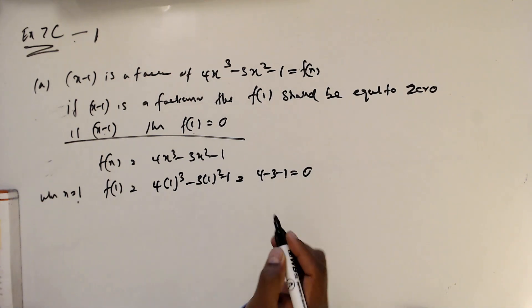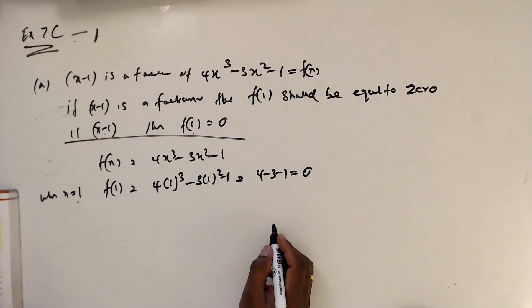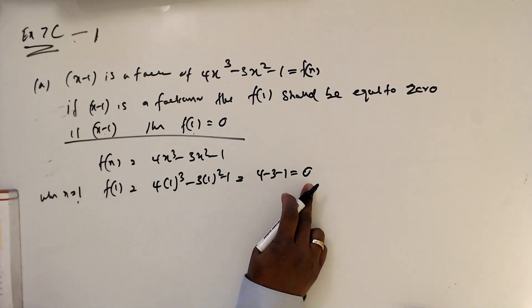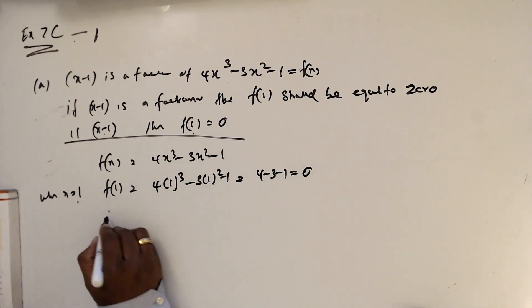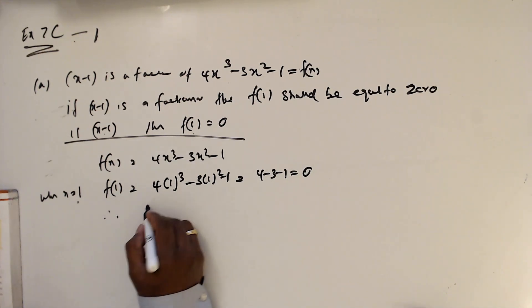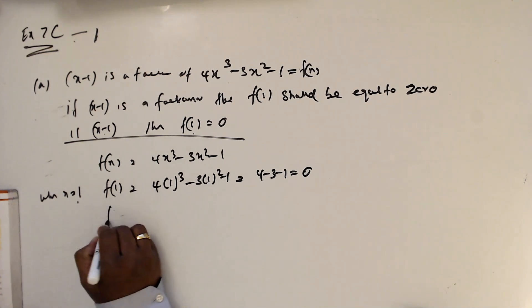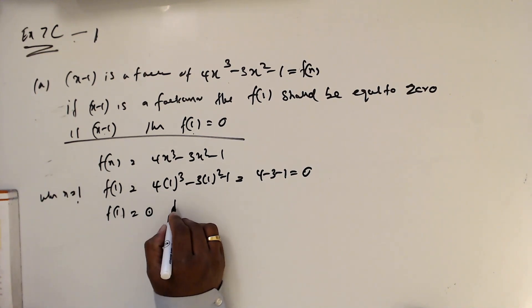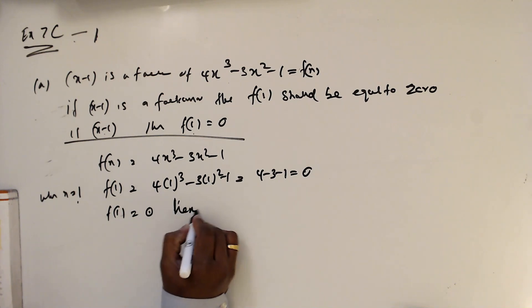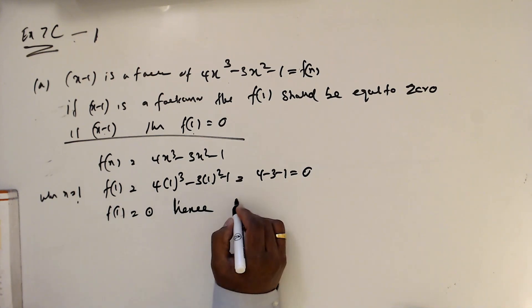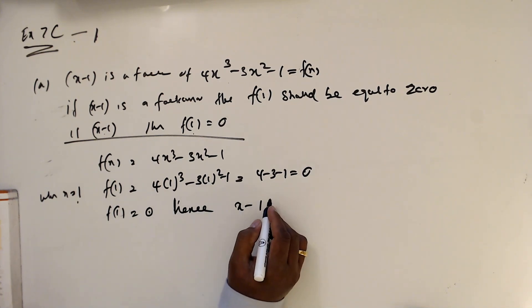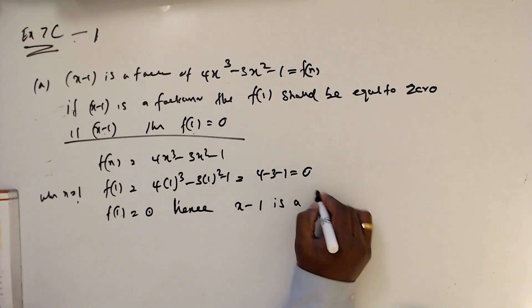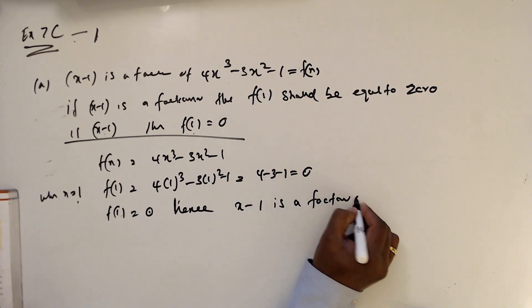f(1) = 4 minus 3 minus 1, which equals zero. Yes, f(1) equals zero.